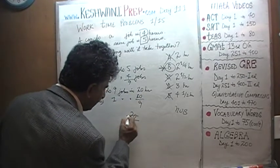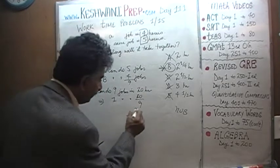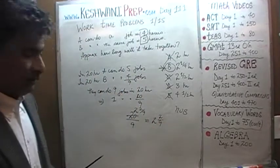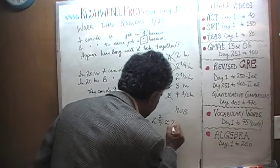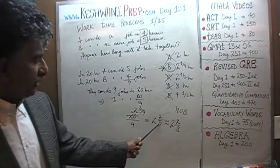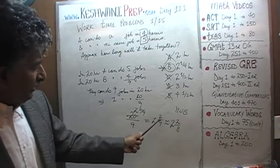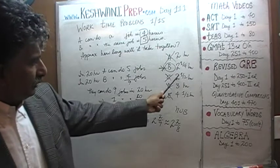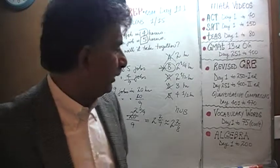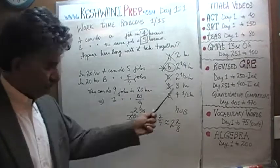They don't have to do nine jobs — they only have to do one job. That implies that they can do one job in 20 over nine hours. 20 over nine: there are two nines in 18, so once you take away 18 you're left with two. So it's two and two-ninths, which is approximately two and a quarter. The closest answer choice to two and two-ninths is not two — two and a half is too far away, two is too far away. Two and a quarter is the closest.